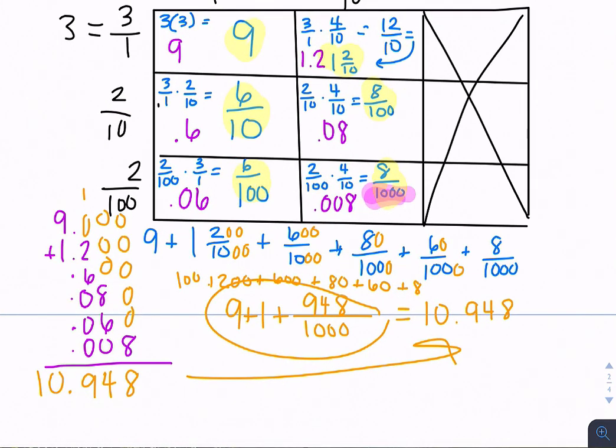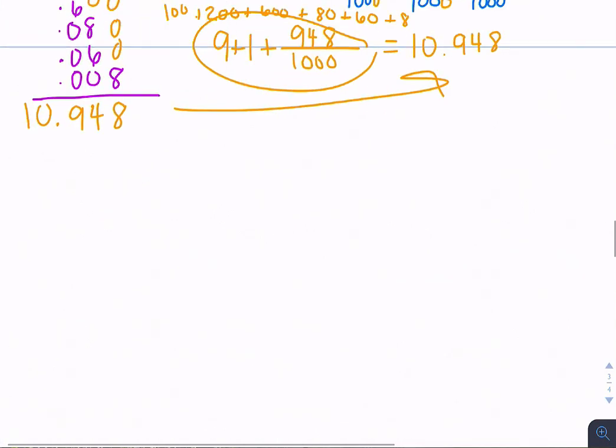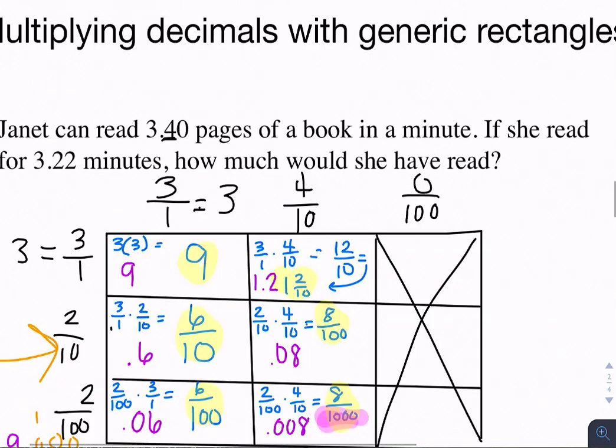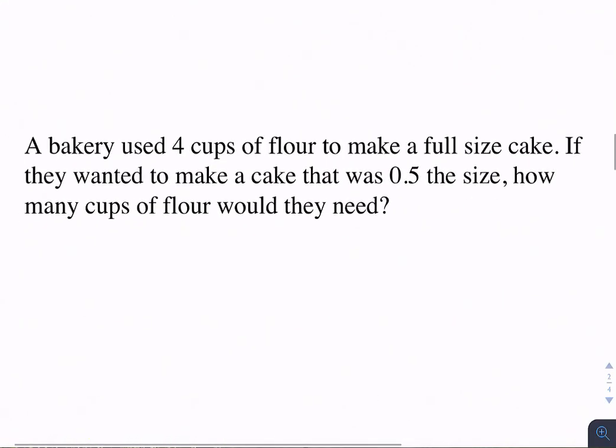So that's one example of how to do that. You could do it either way if you want to set them up and then turn them into decimals right away up here in your generic rectangle. That is completely fine. So let's try one more.